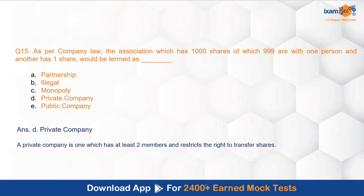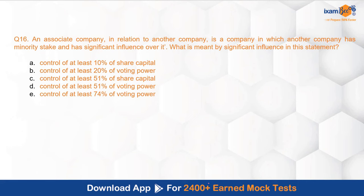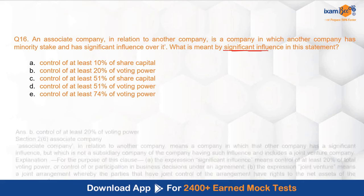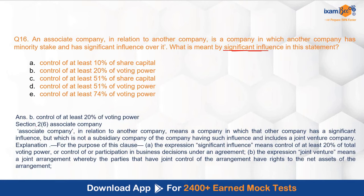The next question is: an associate company, in relation to another company, is a company in which another company has a minority stake and has significant influence over it. What is meant by 'significant influence'? The section explains this term. The correct option is B — control of at least 20% of voting power. Section 2, clause 6 gives the definition of associate company, and in its explanation it states that 'significant influence' means control of at least 20% of the total voting power, or control of participation in business decisions under an agreement. Joint venture is also explained there. When studying, you must understand not only the concept but also the specific terminologies used.